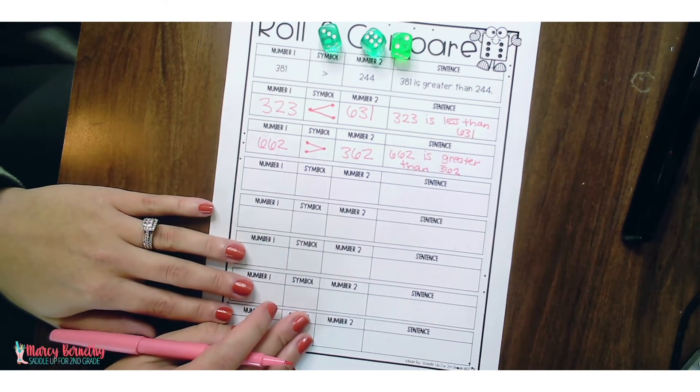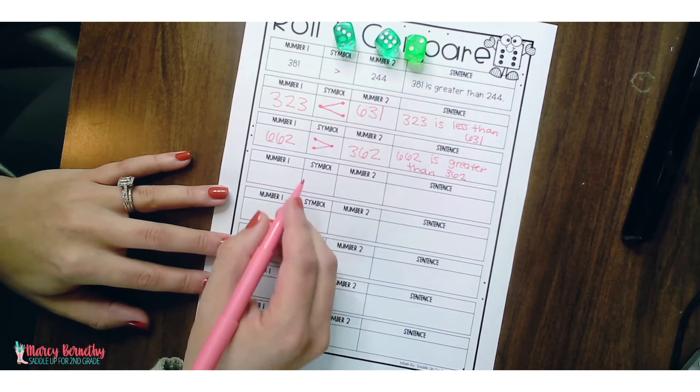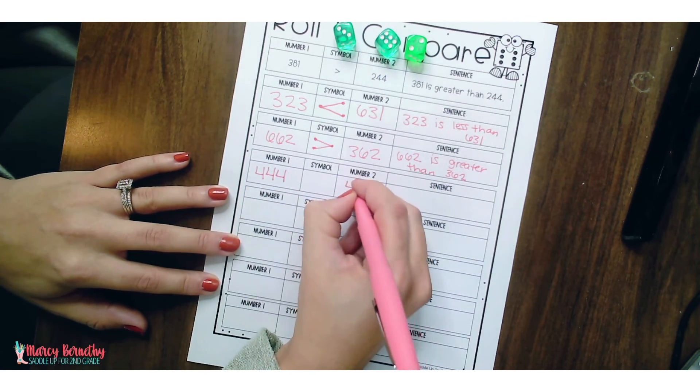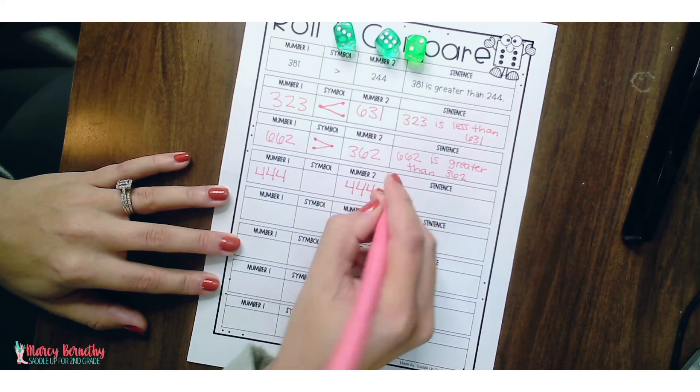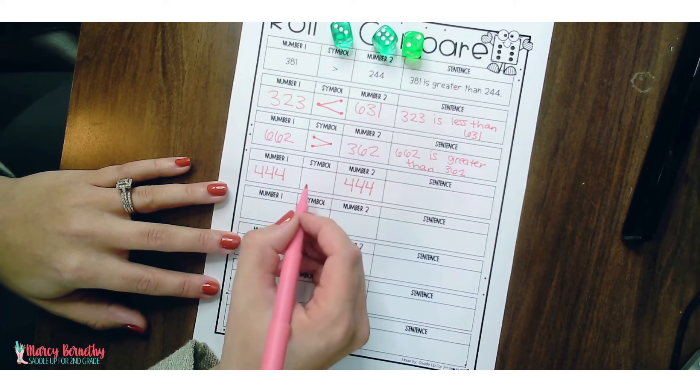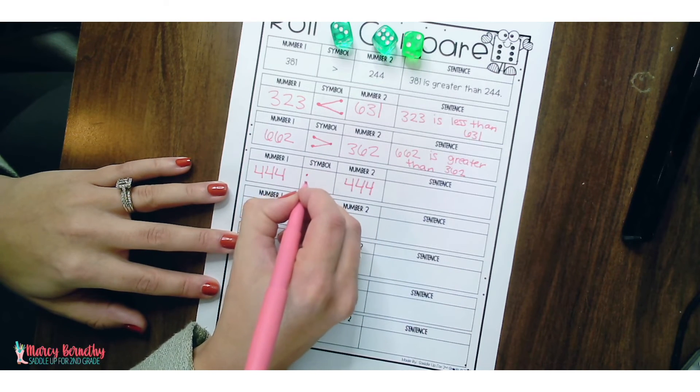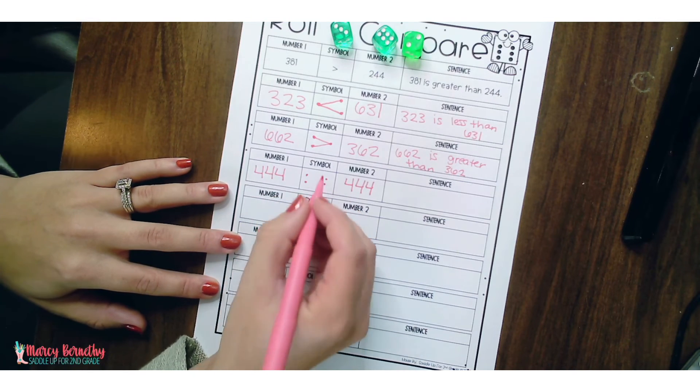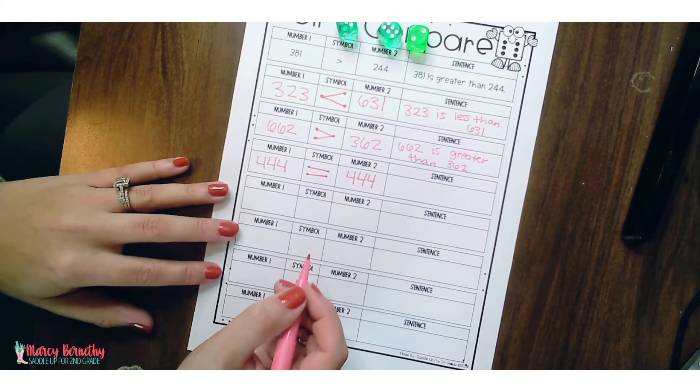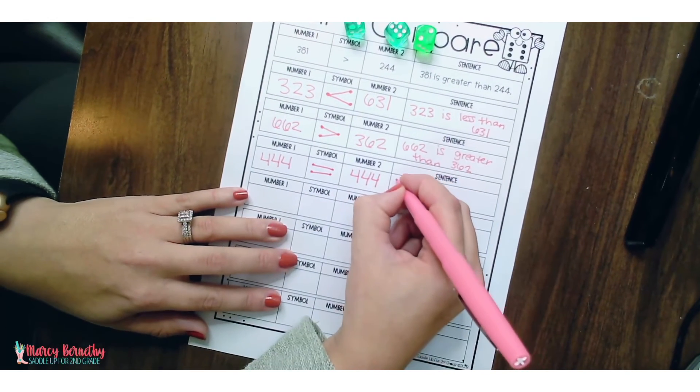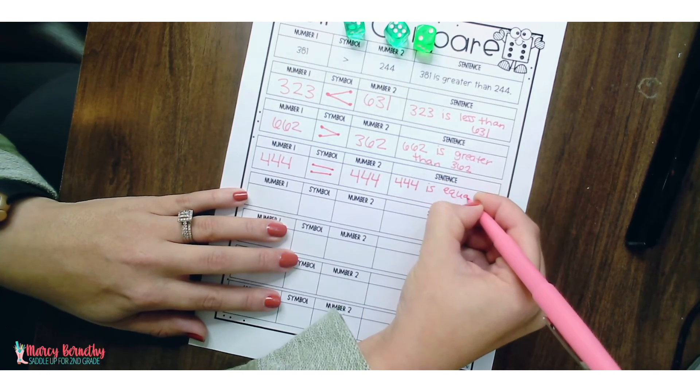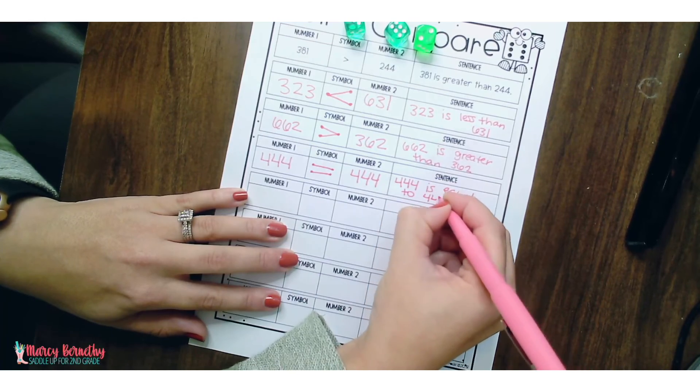Now let's say that your students are comparing numbers that are equal. So let's pretend that we rolled 444 and 444. They can also, because the numbers are the same, they can draw two dots next to each number and then draw two lines to connect to show that it is equal to. And then they could write 444 is equal to 444.